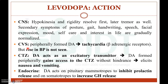Regarding the cardiovascular system, peripherally formed dopamine leads to tachycardia due to its beta-adrenergic receptor action, but usually there is no rise in blood pressure. In the chemoreceptor trigger zone, dopamine acts as an excitatory transmitter; dopamine formed peripherally gains access to the chemoreceptor trigger zone and may elicit nausea and vomiting. In endocrine glands, dopamine acts on pituitary mammotropes to inhibit prolactin release and on somatotropes to increase growth hormone release.